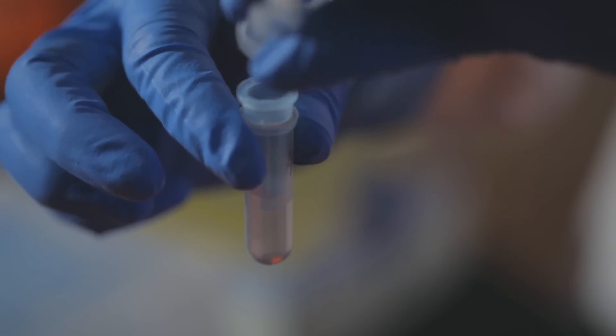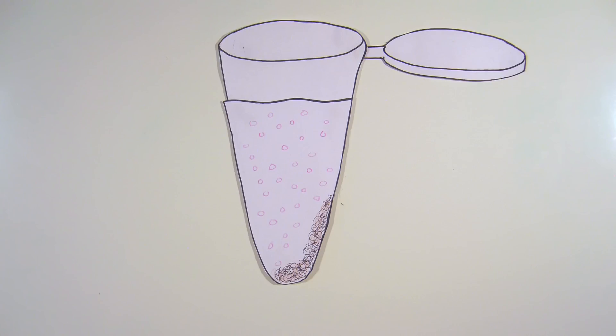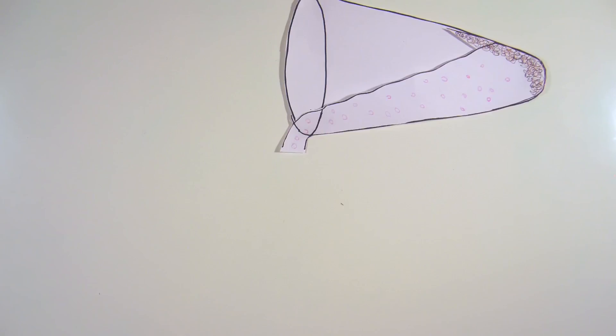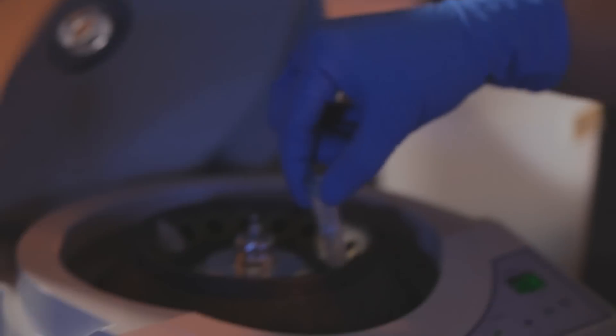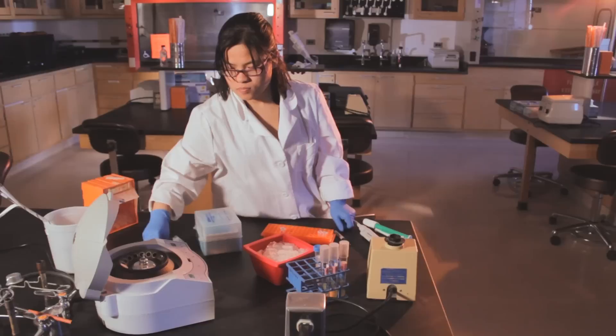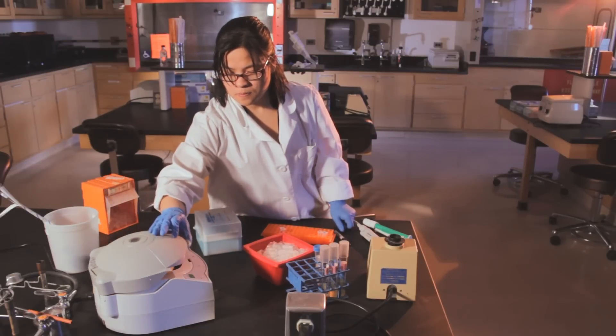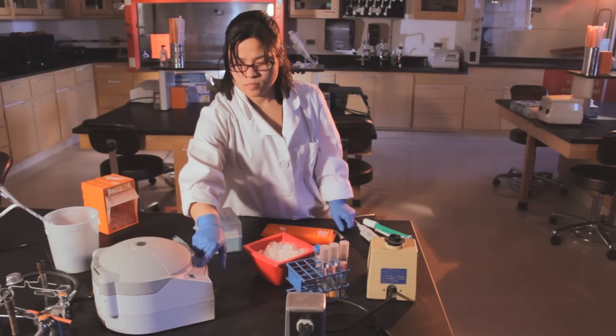Add the clear supernatant to the spin column by pipetting or pouring the supernatant directly into the column. You can now discard the microfuge tube containing the pellet. There is no cap for the spin column, so place it carefully in a microcentrifuge. Remember to balance the centrifuge. Spin for one minute at full speed.